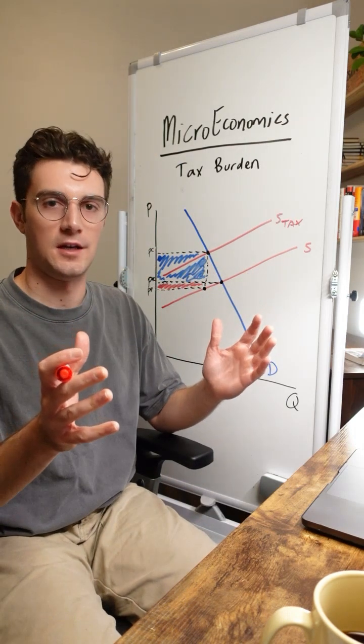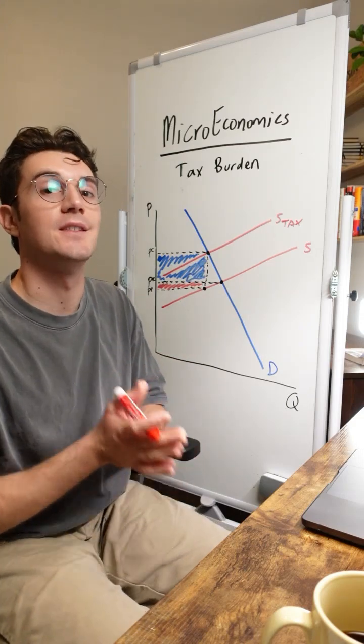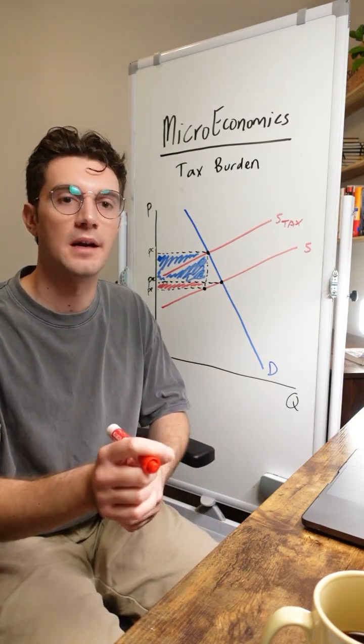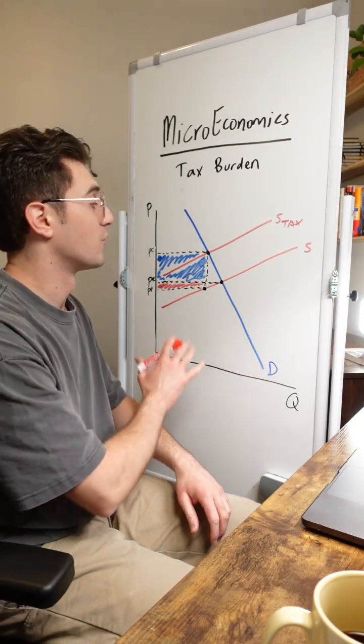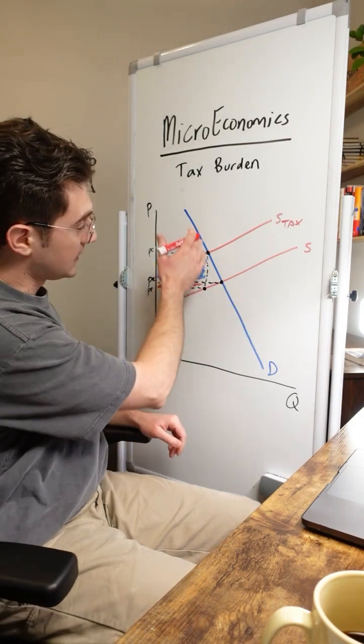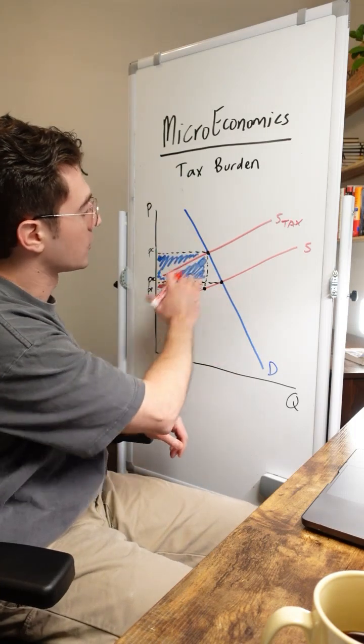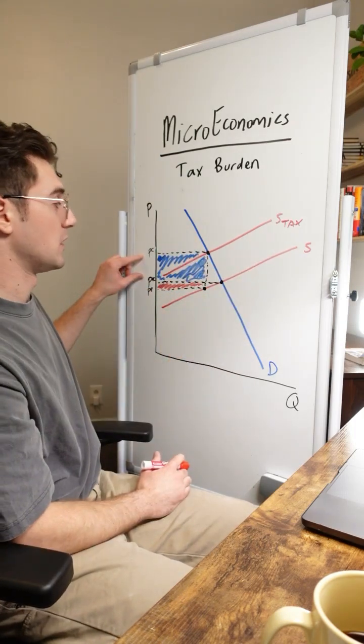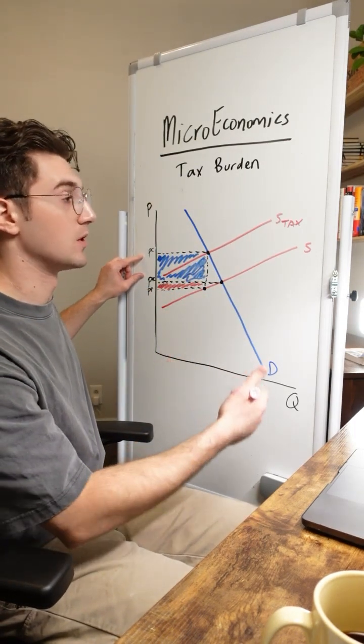The big conceptual takeaway here is that the more inelastic curve is the one who bears the majority burden. In other words, the more vertical curve between demand and supply bears the majority burden of the tax. In this case, the demand curve is more vertical than the supply curve. Thus, we see that consumers bear the majority burden.